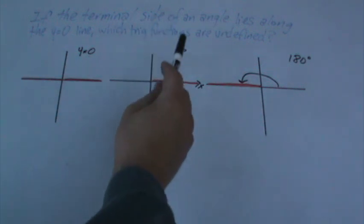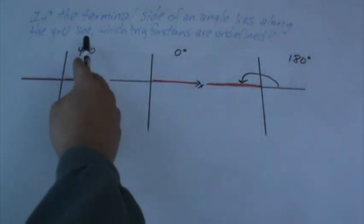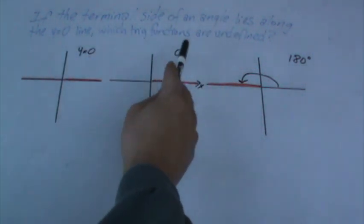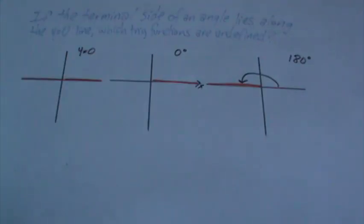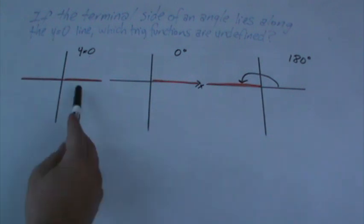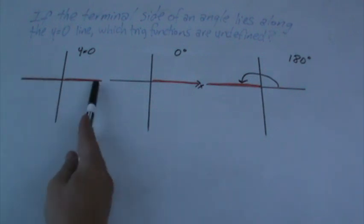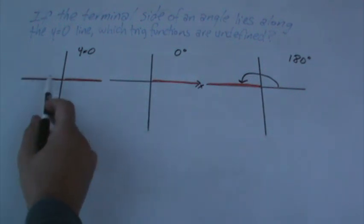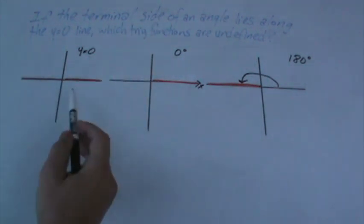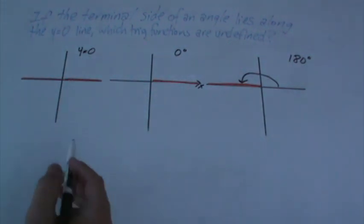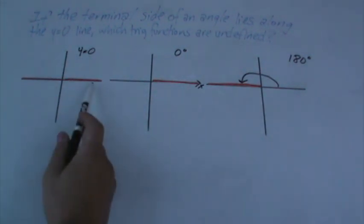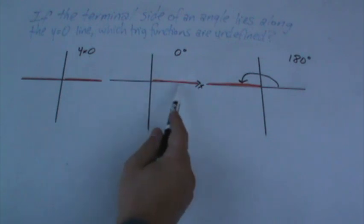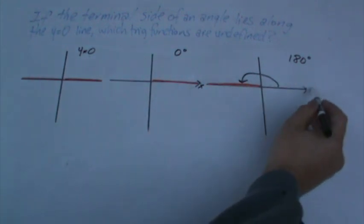If the terminal sides of an angle lies along the y equals 0 line, which trig functions are undefined? So if the terminal side lies along the y equals 0 line, what's the y equals 0 line? That's where I drew this orange line right here. So it's a horizontal line. So if that's the terminal side of an angle, which trig functions are undefined? If the terminal side of an angle lies along this line, you either have 0 degrees or 180 degrees.